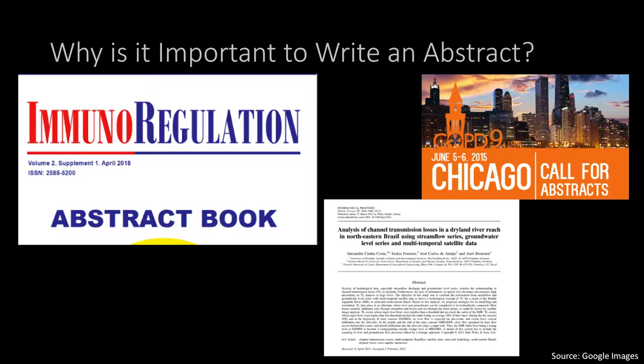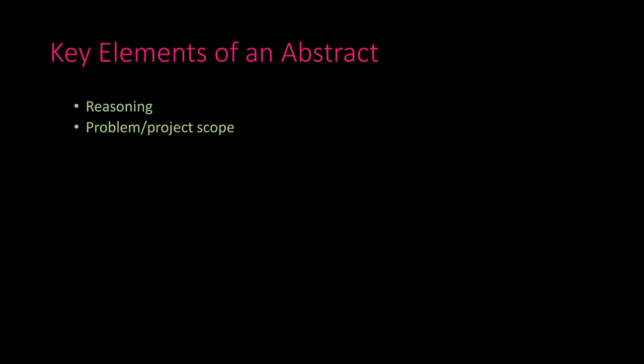Now, what goes into an abstract? The main elements include reasoning — why is this problem or field important, and why should we care about your work? This is followed by the specific problem: you give a very general opening introduction to the field, and that reasoning is followed by the project scope. Then come simple methods — nothing too complicated — just what you used to address the problem.